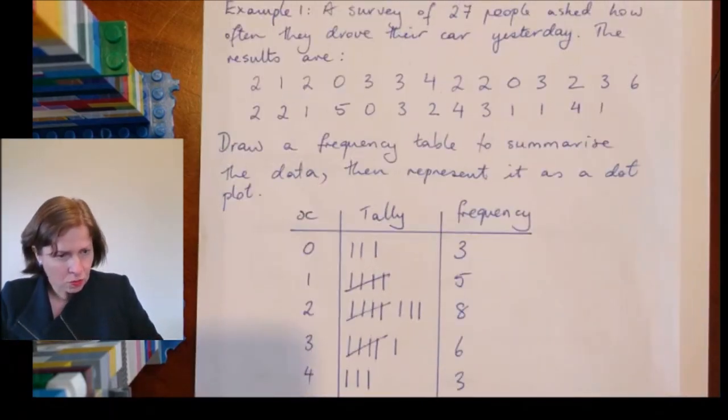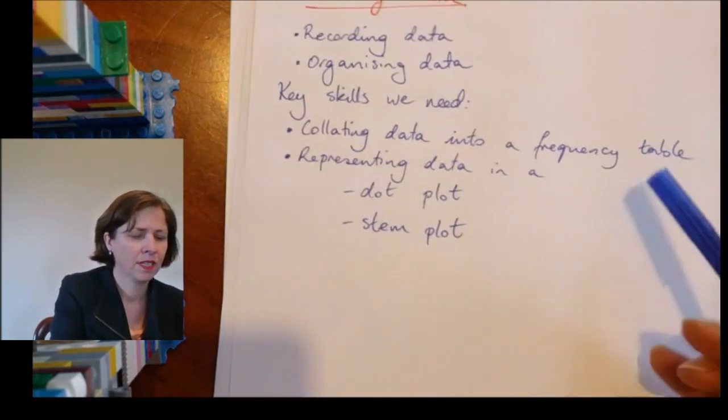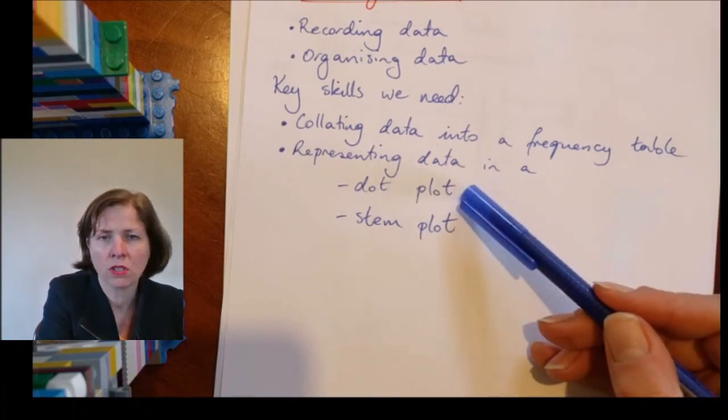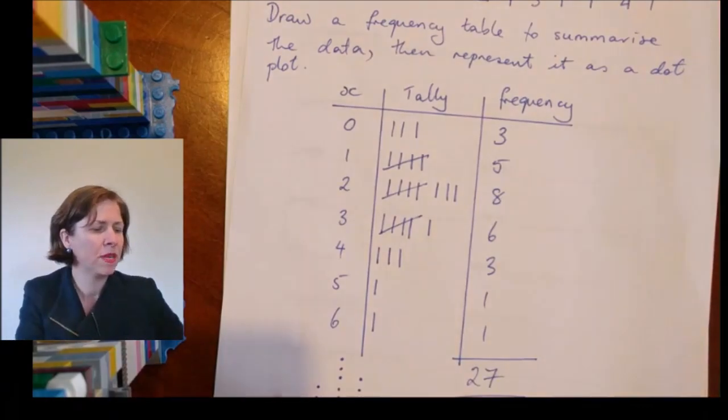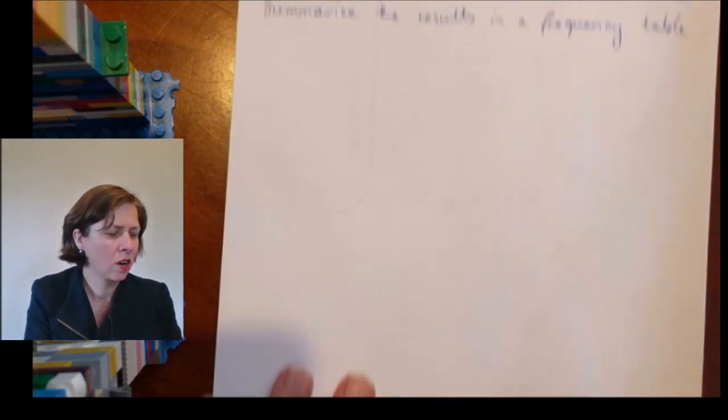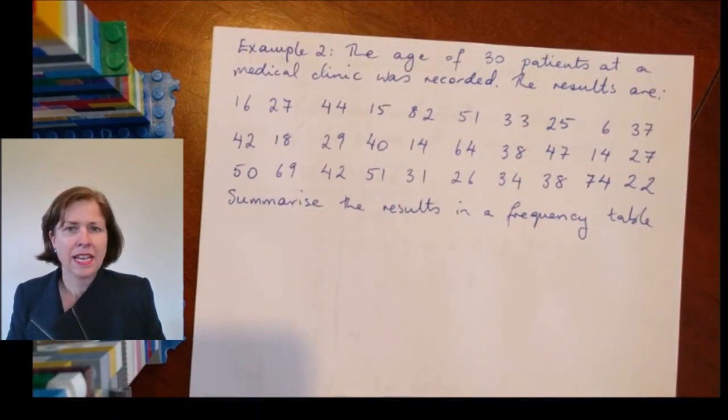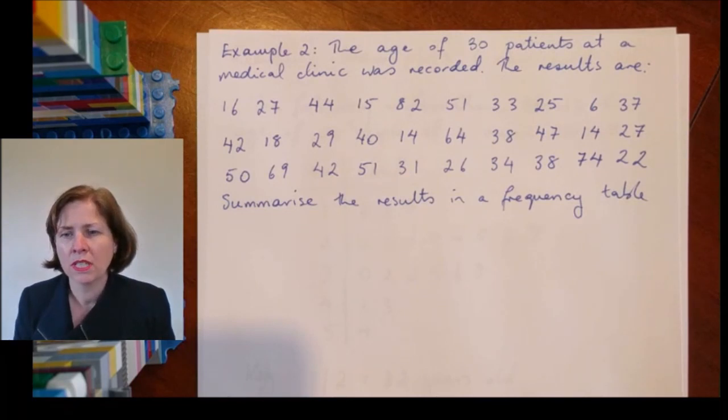Okay, so what we've been practicing so far then is we've looked at collating data into a frequency table and we've done a dot plot. Now we're going to do another frequency table example, because sometimes it's going to look a little bit different.